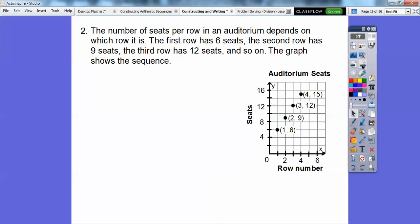The number of seats per row in an auditorium depends on which row it is. The first row has 6 seats, the second row has 9 seats, the third row has 12 seats and so on. The graph shows the sequence. The first row has 6 seats, so over 1, up 6. The second row, over 2, up 9. Over 3, up 12. Over 4, up 14.